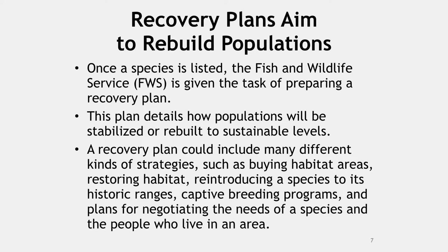Once a species is listed, the Fish and Wildlife Service (FWS) is given the task of preparing a recovery plan. This plan details how populations will be stabilized or rebuilt to sustainable levels. A recovery plan could include many different kinds of strategies, such as buying habitat areas, restoring habitat, reintroducing a species to its historic ranges, captive breeding programs, and plans for negotiating the needs of a species and the people who live in an area. The FWS can then help landowners prepare habitat conservation plans — specific management approaches that identify steps to conserve particular pieces of critical habitat.